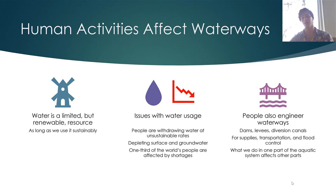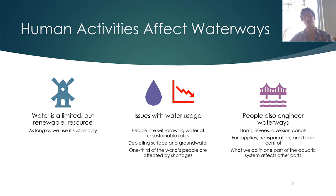Human activities affect waterways and water bodies. Water is a limited but renewable resource — an exhaustible renewable resource. As long as we use it sustainably, we can freely use it. However, people are withdrawing water from aquifers and surface water reservoirs at unsustainable rates, and one third of the world's people are affected by shortages. Yemen, for example, was in 2009 the first country to completely run out of water from their aquifers, and this problem will only grow in the next 15 to 20 years.